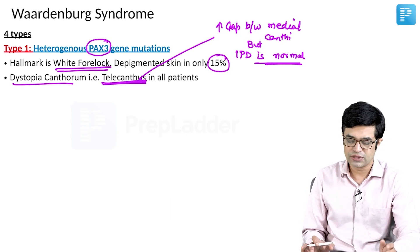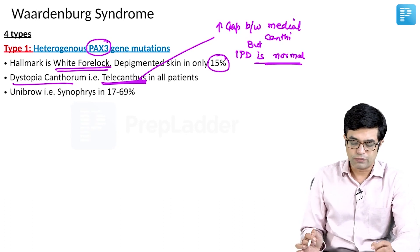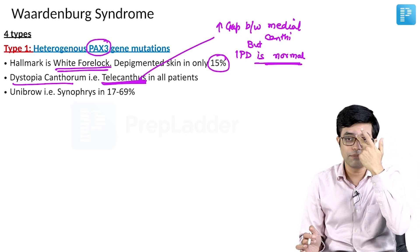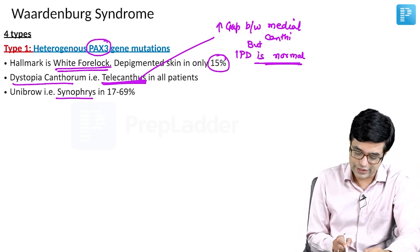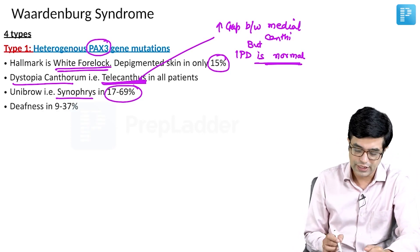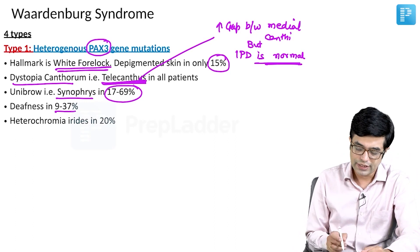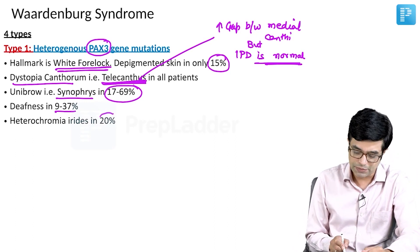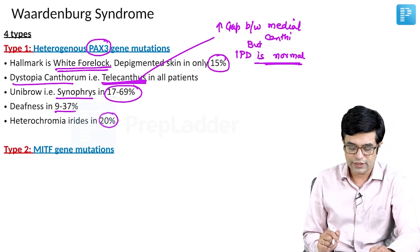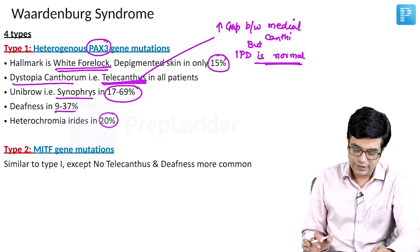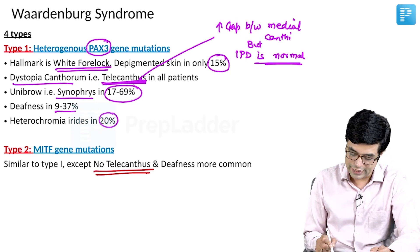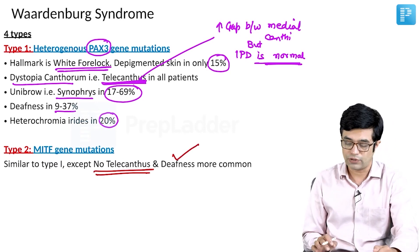Dystopia canthorum is present in almost 100% of Type 1 patients. Unibrow, or synophrys — a single eyebrow connecting in the midline — is present in 17 to 69% of patients. Deafness is present in 9 to 37%. Heterochromia iridis is present in 20% of individuals. Type 2 has MITF gene mutations. It is similar to Type 1, except there is no telecanthus, and deafness is more common compared to Type 1.